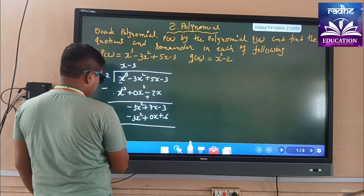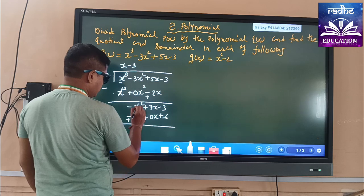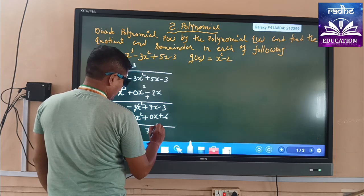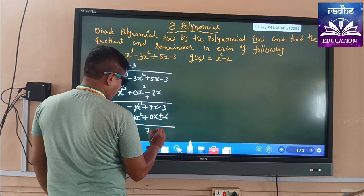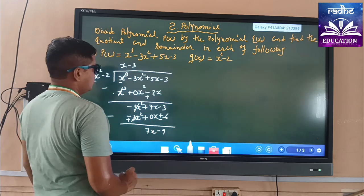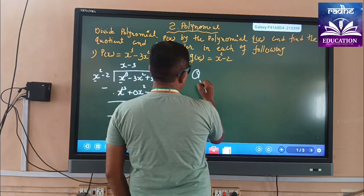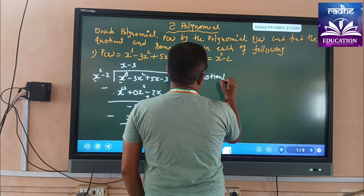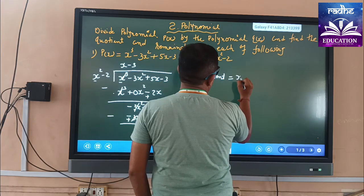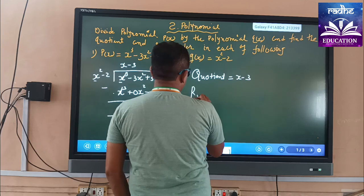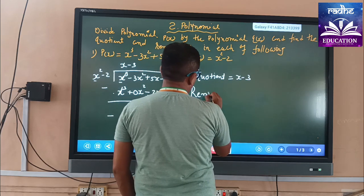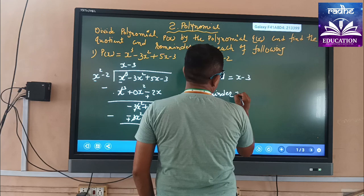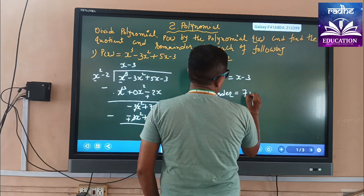Again we apply the minus sign, so this sign becomes plus — these are cancelled. These remain as 7x. And this one becomes 7x - 9. So in this problem, the quotient is x - 3 and the remainder is 7x - 9.